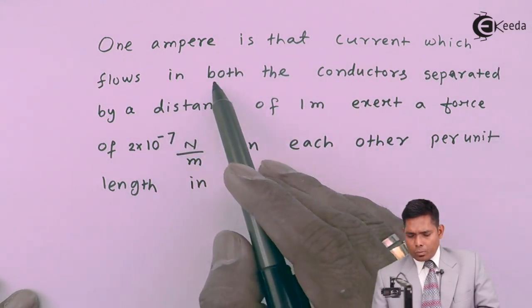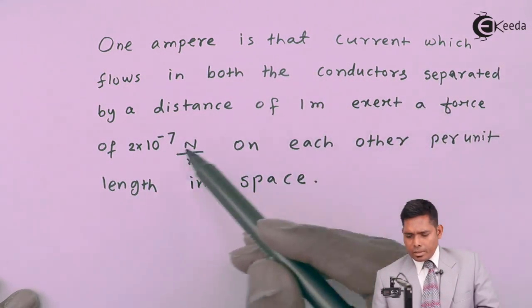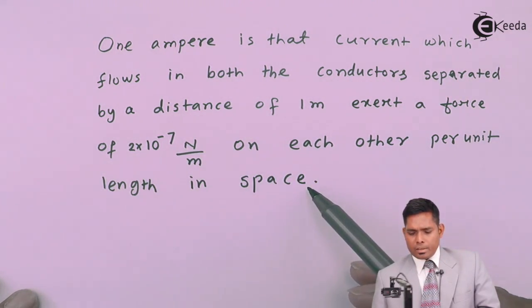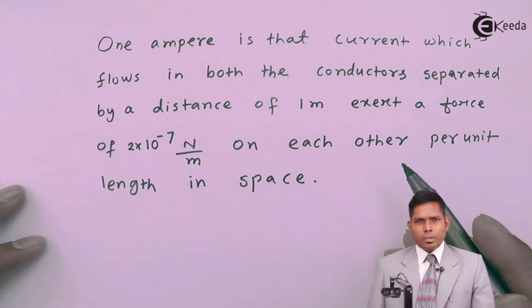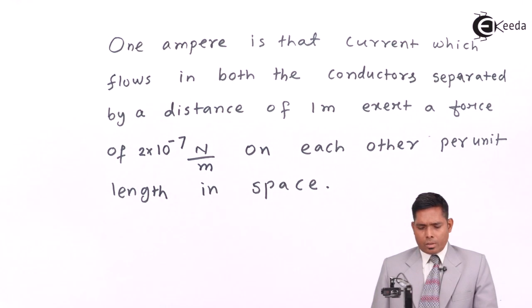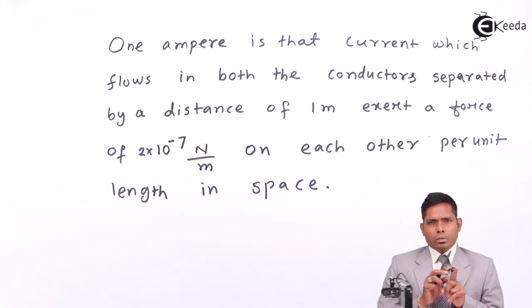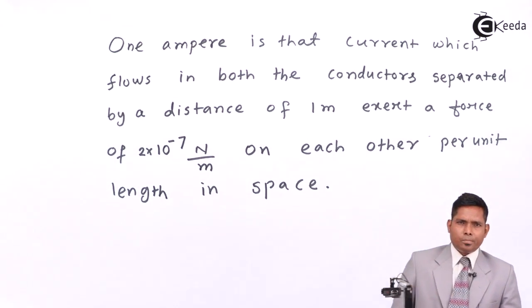So one Ampere is that current which flows in both conductors separated by a distance of one meter and exerts a force of 2×10⁻⁷ Newton per unit length on each other, where both conductors are kept in free space — that is, in vacuum or air. If holding two conductors in air, separated by one meter, produces an attractive force of 2×10⁻⁷ Newton per meter, then the current must be one Ampere.